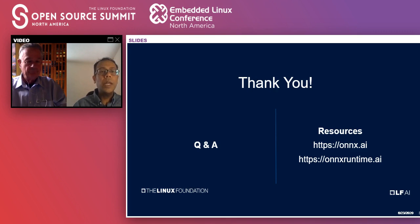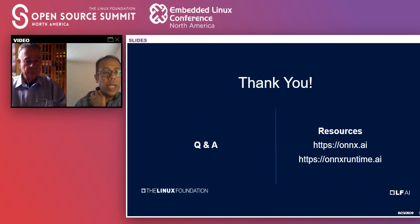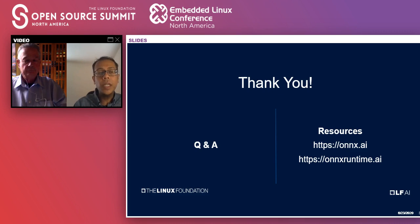There's a question about scikit-learn conversion — does it support all pipelines or only some model types? It supports a variety of model types but not a hundred percent, as scikit-learn has a lot of functionality that isn't yet represented. For all common model types you should be able to convert. If you go to the scikit-learn to ONNX converter GitHub, they have a list of what's supported so you can check whether your particular pipeline can be fully converted.